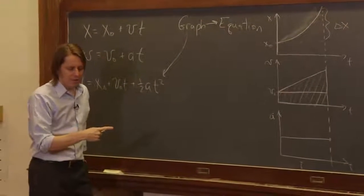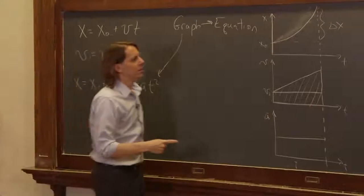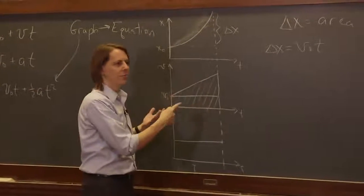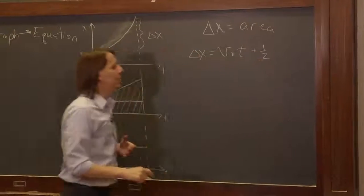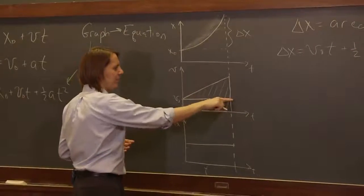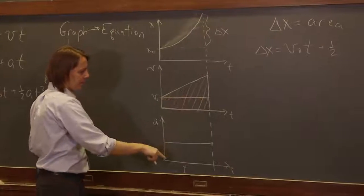And what's the triangle? Well, the triangle's area is—the area of a triangle is one-half base times height, right? Plus one-half. What is the base? We'll call that the base. That is t.